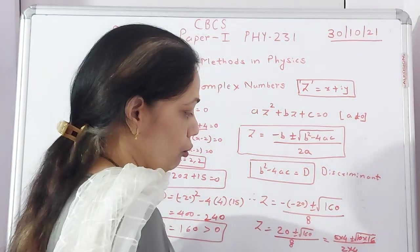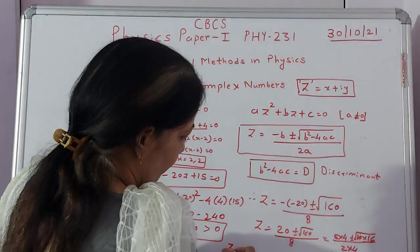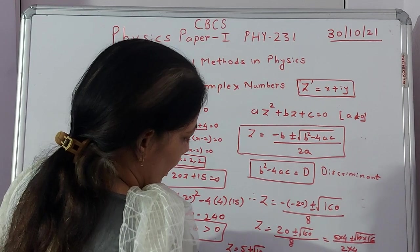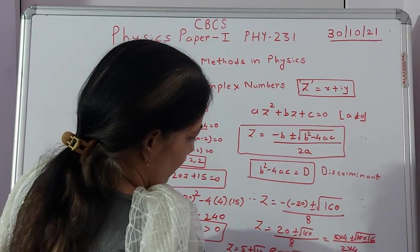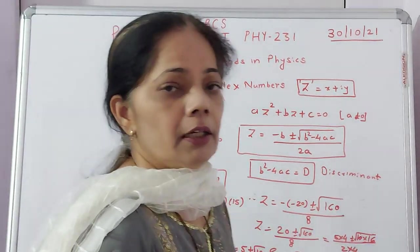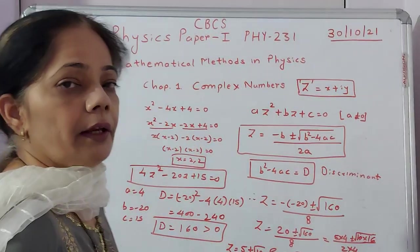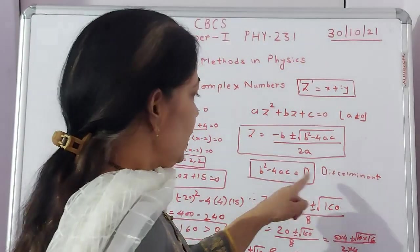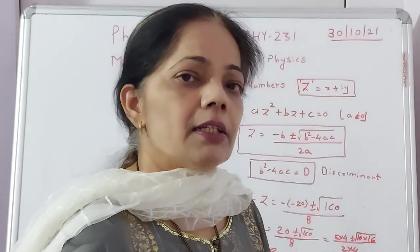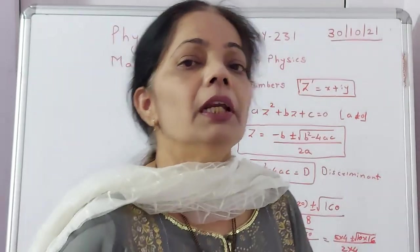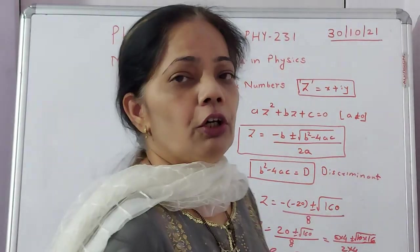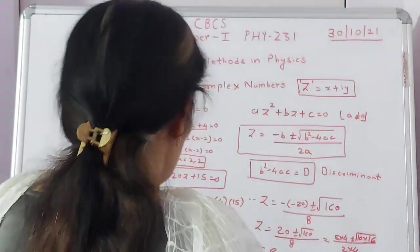So therefore what are the solutions? Solution will be (5 + √10)/2 and (5 - √10)/2 is the solution set for such quadratic equation where my discriminant D is positive. But when you have an example where the D turned out to be negative, there is the introduction of the number I or the complex number which we will talk about here.